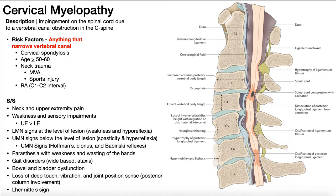In this video, we're going to be talking about cervical myelopathies. We're first going to talk about what they are and what can cause them, then we'll go into the risk factors, and then we'll talk about the signs and symptoms. A cervical myelopathy is really when you have impingement on the spinal cord in the cervical spine due to an obstruction of the vertebral canal in that region.